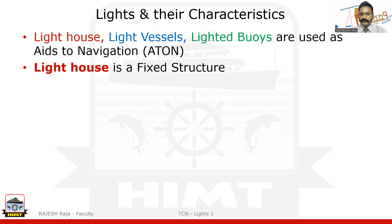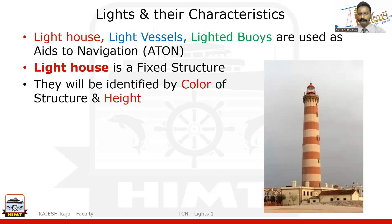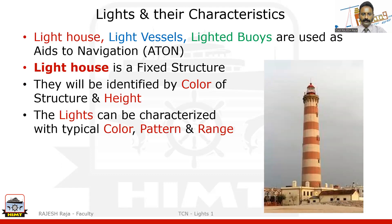A lighthouse is a fixed structure — I'm going to show you a picture. This structure is identified by two important features: color and height. In this example, you can see it is white and red with horizontal bands. You can have different bands or vertical bands depending on how it has been constructed. This is the physical feature. But it also includes a light shown at nighttime, characterized by color, pattern or rhythm, and range.